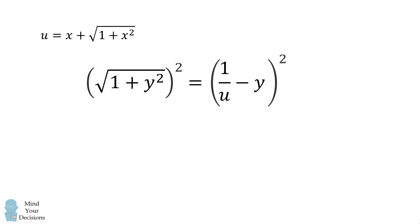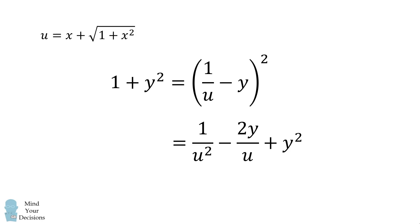We will then square both sides of the equation. The left-hand side becomes 1 plus y squared. We will then square the right-hand side of the equation. We'll substitute that in.